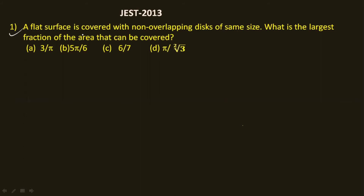The first question: a flat surface is covered with non-overlapping disks of the same size — what is the largest fraction of the area that can be covered? Here you have a flat surface covered using non-overlapping disks of same size. If you have studied solid-state physics, you will understand that non-overlapping disks of the same size covering a flat surface gives you the hexagonal lattice.